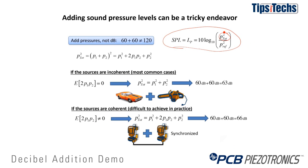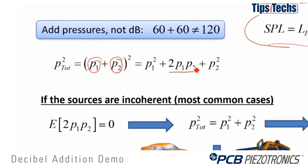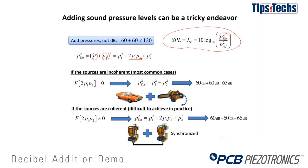What we're interested in here is this total pressure squared term. When we're adding two sources together, P1 and P2, the pressure squared is the square of the sum of those two sources. What we're concerned about in this demonstration is this cross term, 2P1P2. Whether that cross term is present depends on the type of sources that we're adding together.